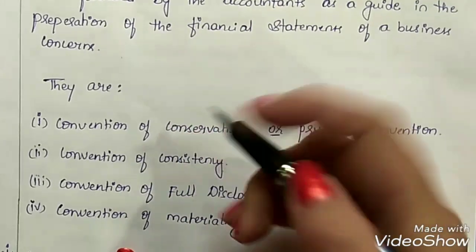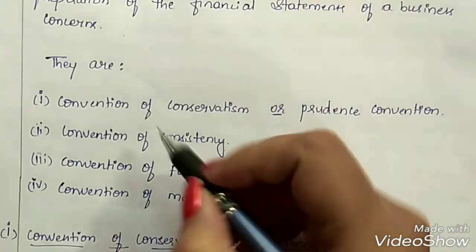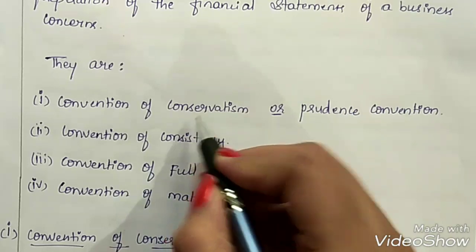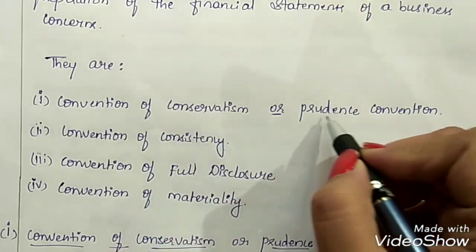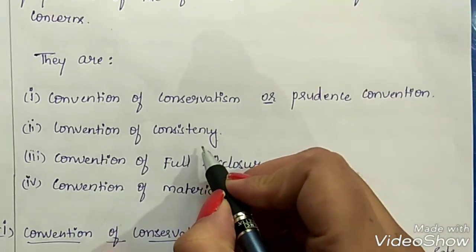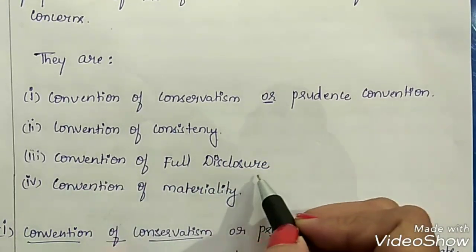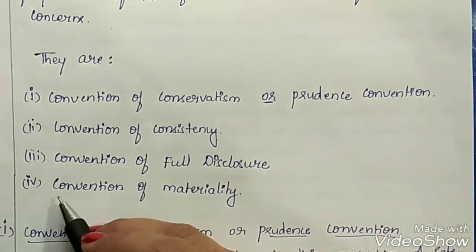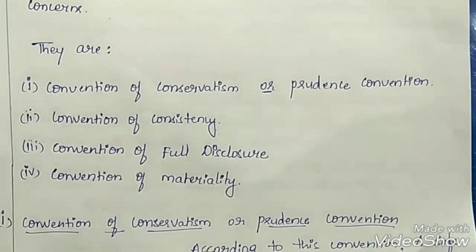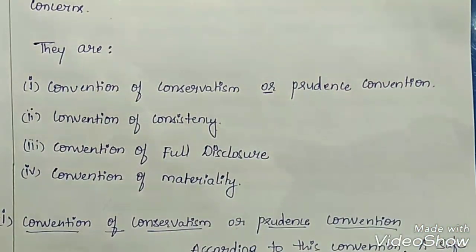There are four accounting conventions. They are: convention of conservatism or prudence convention, convention of consistency, convention of full disclosure, and convention of materiality. So let's try to understand them in detail.